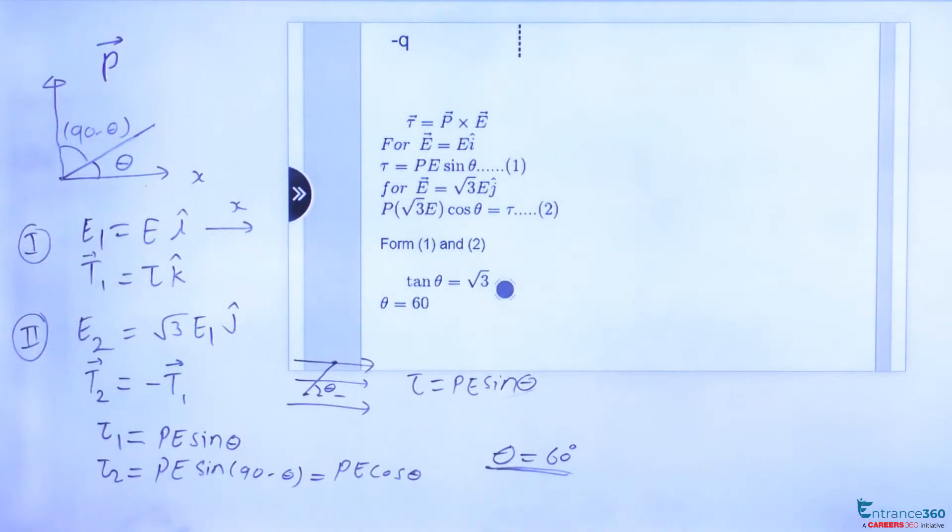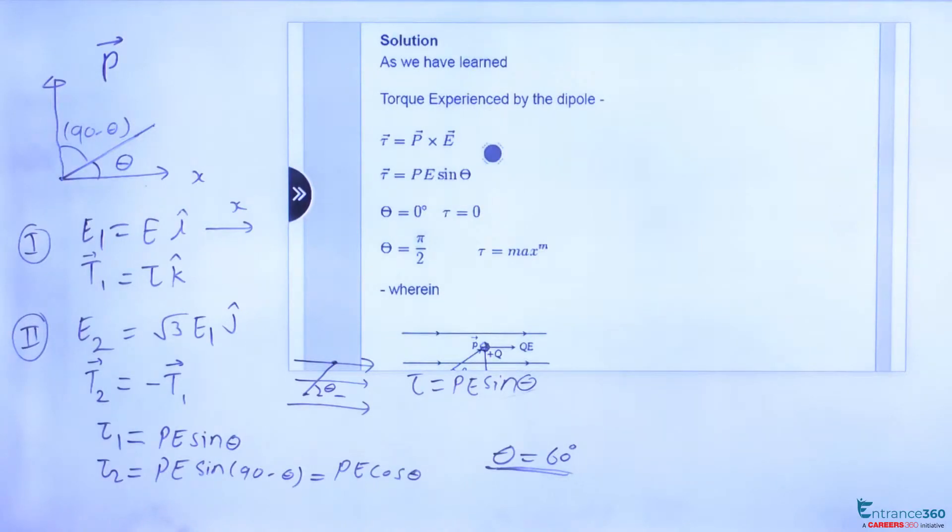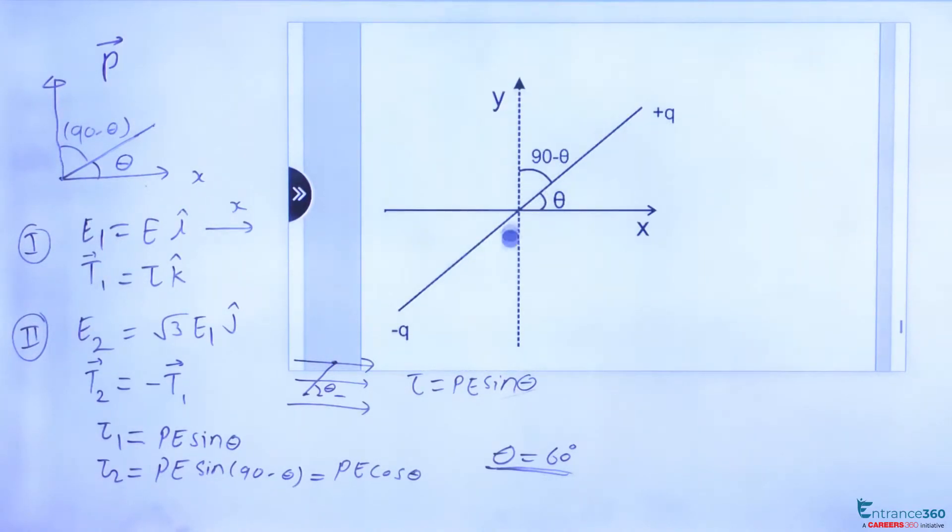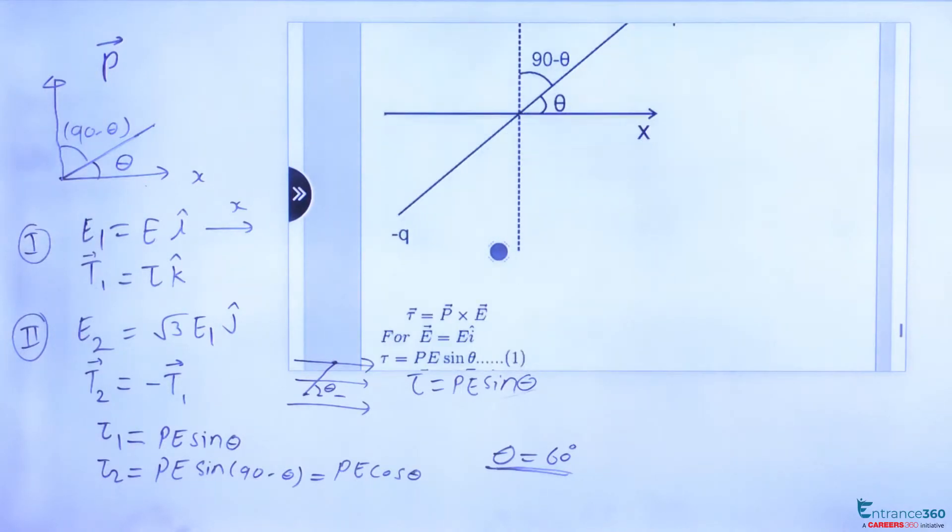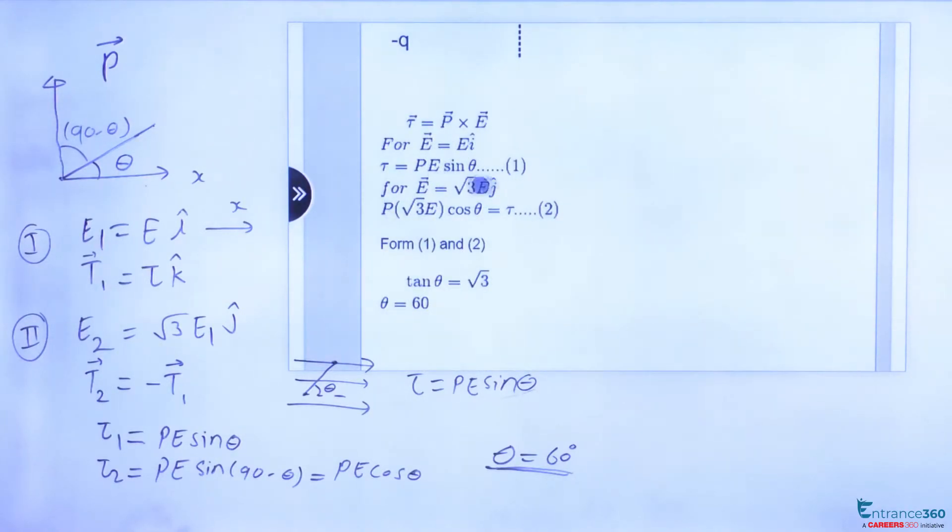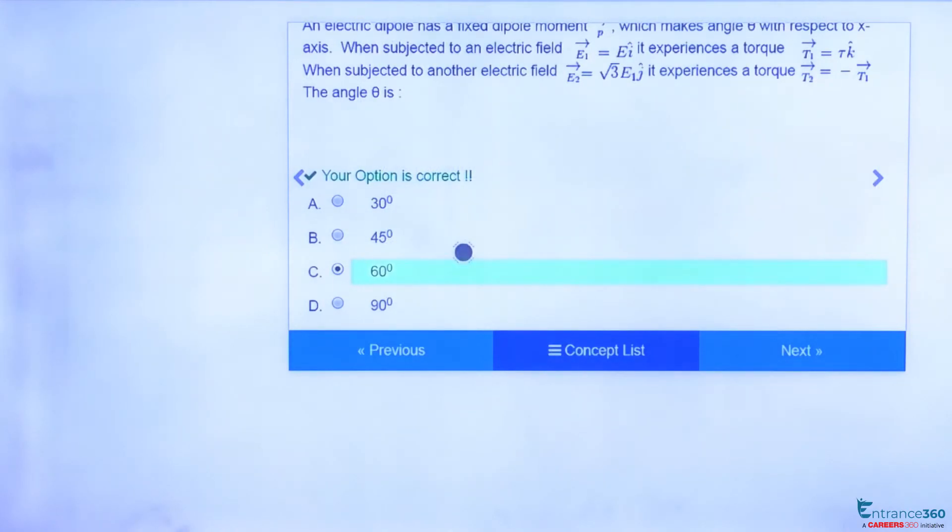Let's summarize what we have done to solve the question. First we understood the concept used while solving the question which is torque expressed by the dipole. Then we drew a figure to understand the concept more. Then we applied two formulas considering direction of electric field and dipole moment and from these two equations we got value of theta which is 60 degrees. So we get our answer as option C.